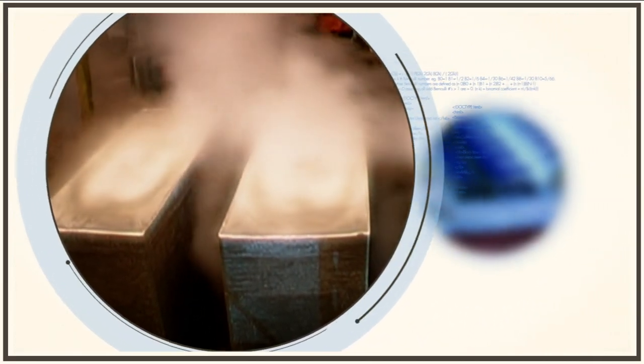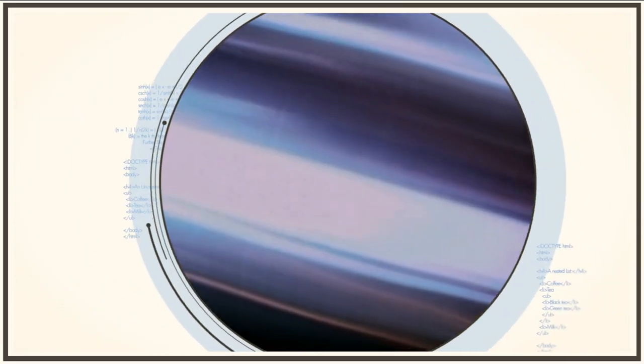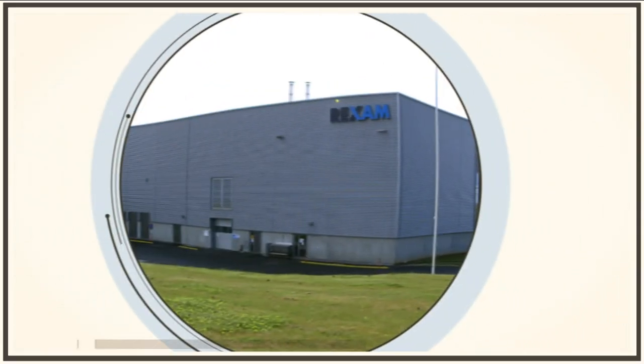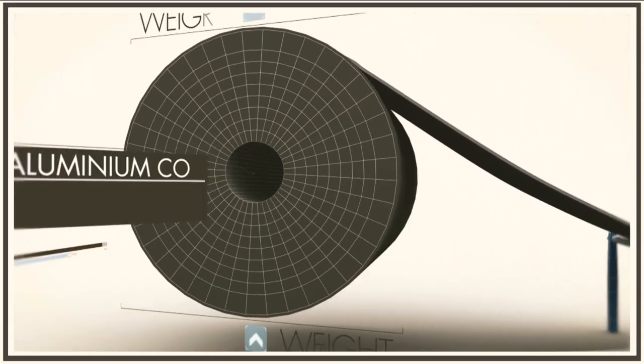Using largely renewable energy supplies, the ingots are then rolled into aluminium sheet. The aluminium arrives at Wrexham's manufacturing plants in huge coils, each around ten tonnes and five miles in length.